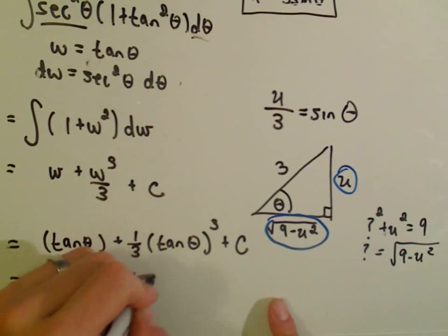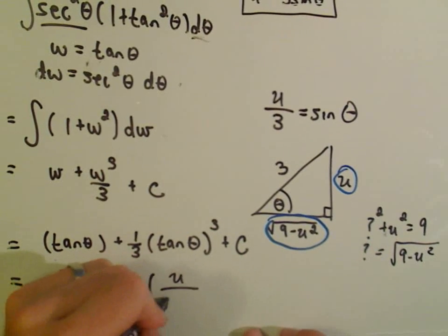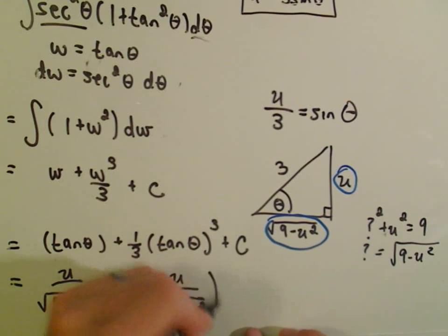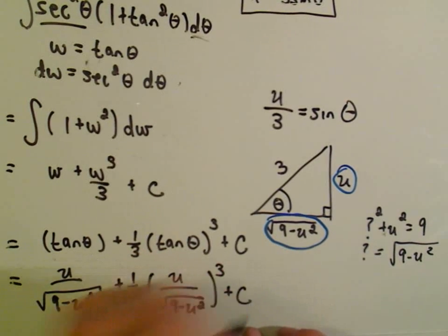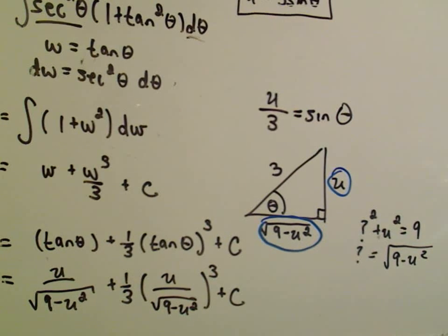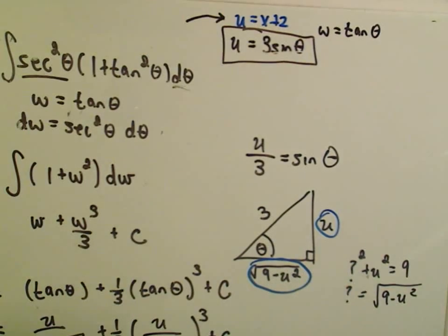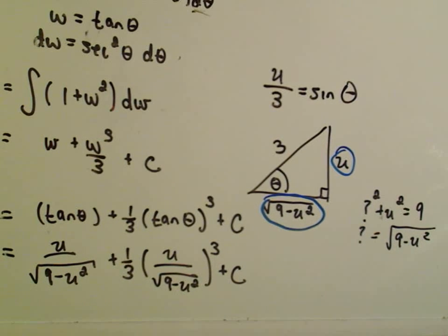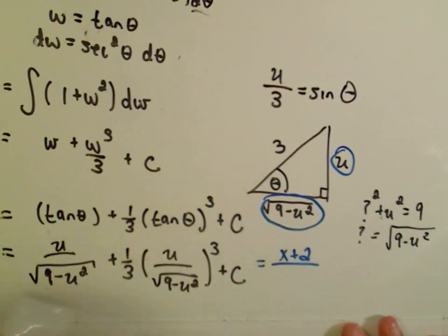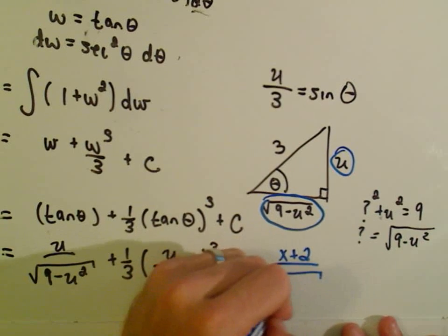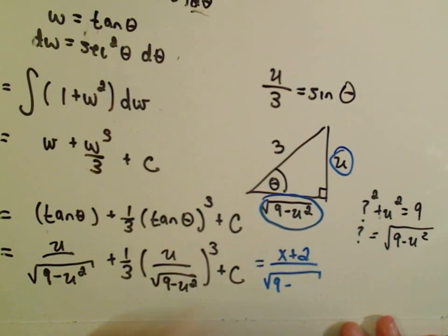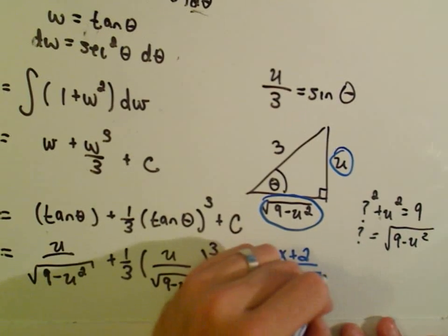So plugging back in, we have u over the square root of 9 minus u squared, plus 1 third times u over the square root of 9 minus u squared, all cubed, plus c. But we still have u's and we want x's. Remember, the very first substitution was u equals x plus 2, so that's what I'm going to replace it with now — x plus 2.